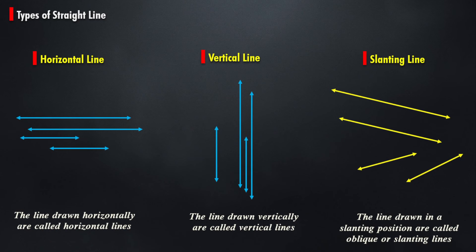The lines drawn horizontally are called horizontal lines. The lines drawn vertically are called vertical lines. And the lines drawn in a slanting position are called oblique or slanting lines.